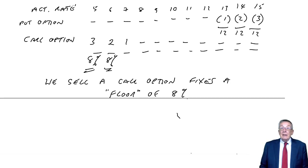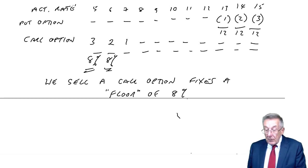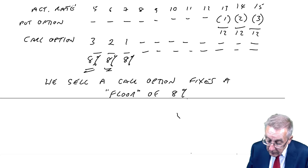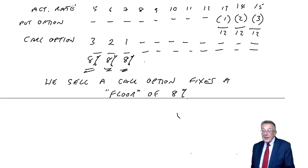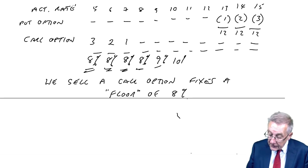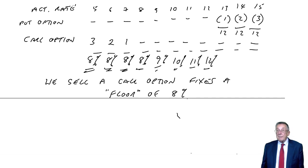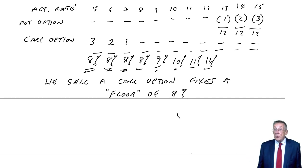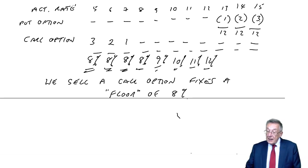If the actual rate is 7%, we're borrowing at 7%, don't exercise our option, but the call option buyer exercises and we give them 1% — so we pay 8% total. At 8% to 12%, neither option is exercised, so we just pay the actual interest rate. Above 12% — at 13%, 14%, 15% — the call option buyer won't exercise since they're getting high deposit interest, but we exercise our put option and end up paying a net 12%.